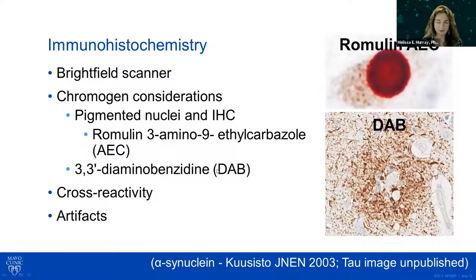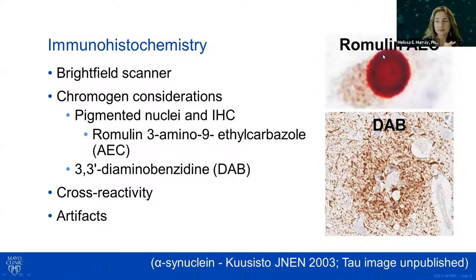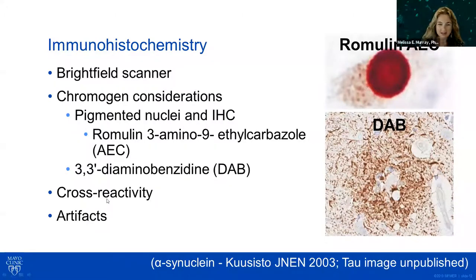A couple of other things to think about is what is your target region. If you're looking in the cortex and limbic structures or basal ganglia, DAB can serve you quite well. But if you start to consider structures that have pigments — substantia nigra — you may want to consider an alternative chromogen that allows you to look at the pathology of interest independently of the contribution from the pigmented nuclei.